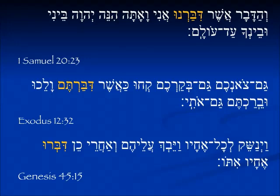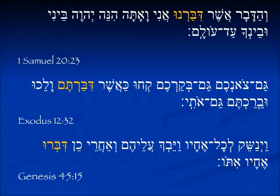In Exodus 12:32, the form for 'all y'all' — di-bar-tem. At the point of departure of the Exodus, Pharaoh says, 'chu ka'asher di-bar-tem' — you take as you have said. In Genesis 45:15, as Joseph makes up with his brothers, he's kissing them, they're crying: 'v'yacharechen dibru echav ito' — his brothers spoke with him. So we see all the endings are the same, just a very slight vowel change accounting for the Piel.